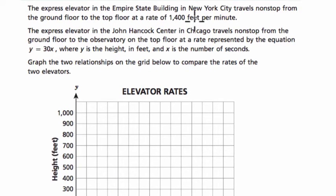The express elevator in the Empire State Building in New York City travels non-stop from the ground floor to the top floor at a rate of 1,400 feet per minute. The express elevator in a different building goes from the ground floor to the observatory on the top floor at a rate represented by this equation, y equals 30x. Y is the height in feet, and x is the number of seconds. Graph the two relationships on the grid below to compare the rate of the two elevators.